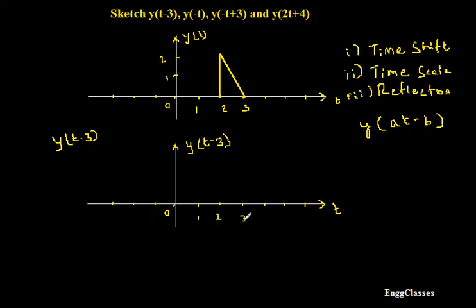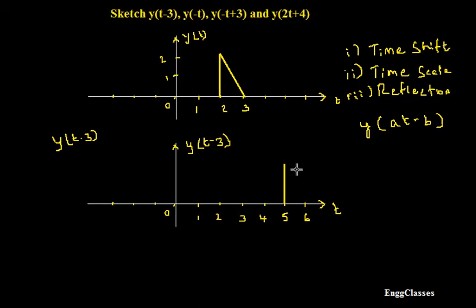Writing the limits: 1, 2, 3, 4, 5, 6. The signal now occupies from 5 to 6. The amplitude and shape of the signal remain the same — there is no change. The shape will remain the same but it takes the new position from 5 to 6. This is the first signal y of t minus 3.